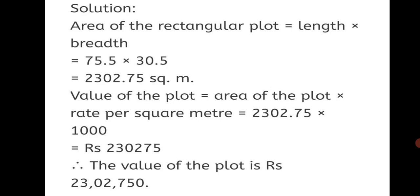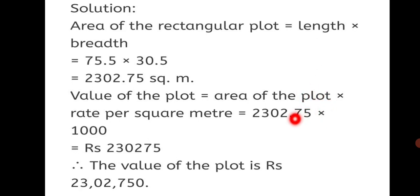There is a 0 missing in the written answer — it should be 23,02,750, so kindly add that 0; it is given correctly below. In 1000 there are 3 zeros, so the decimal point shifts 3 places. There are only 2 decimal places, so we add a 0, and that is how you get the answer 23,02,750.